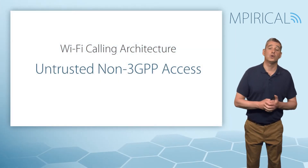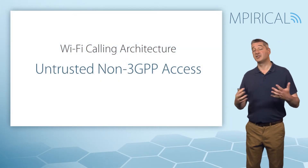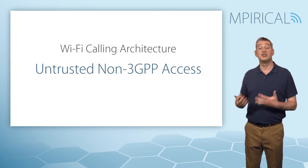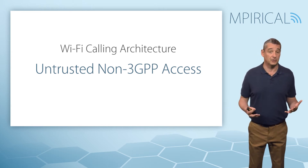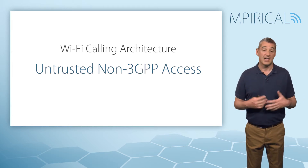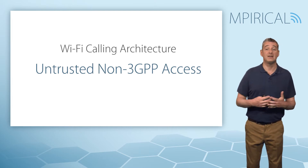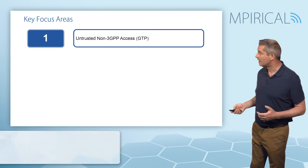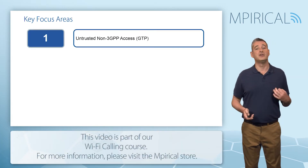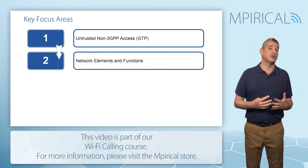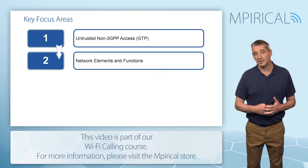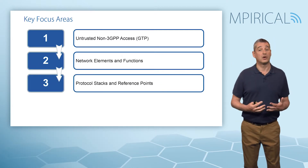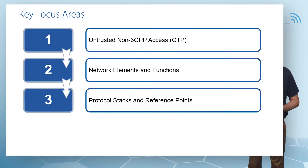As far as Wi-Fi calling is concerned, the key architectural model is based on the untrusted non-3GPP access, using GTP, the GTP tunneling protocol, on the S2B interface. As such, we're going to base the remaining videos in this module on this particular architectural configuration, taking a look at the key network elements and their associated functions before moving on to the protocol stacks and the relevant reference points.